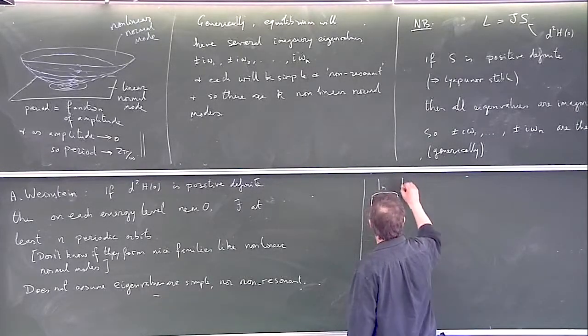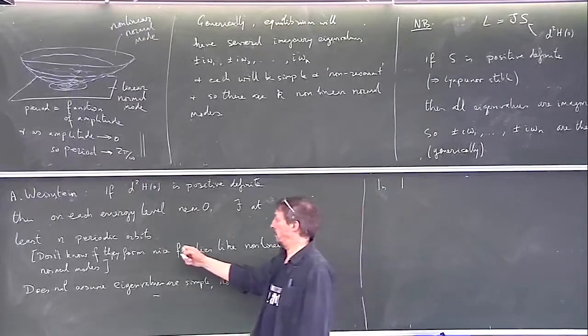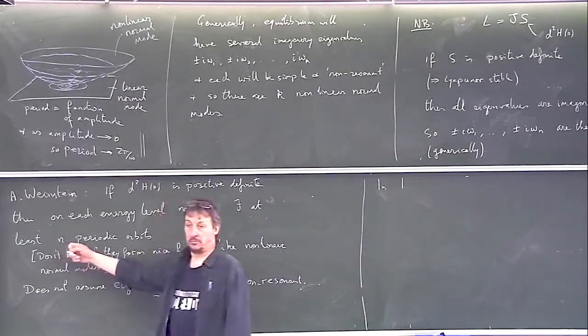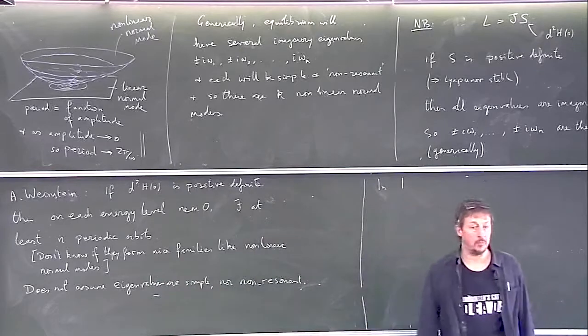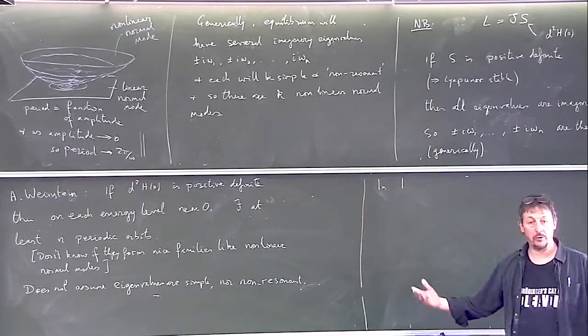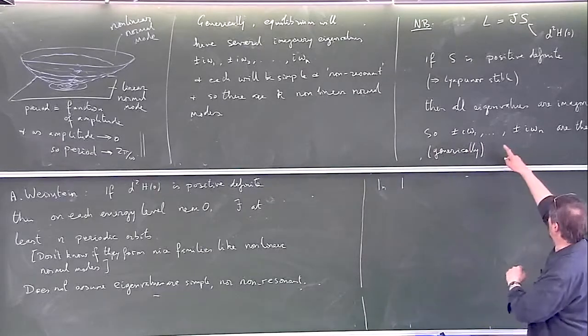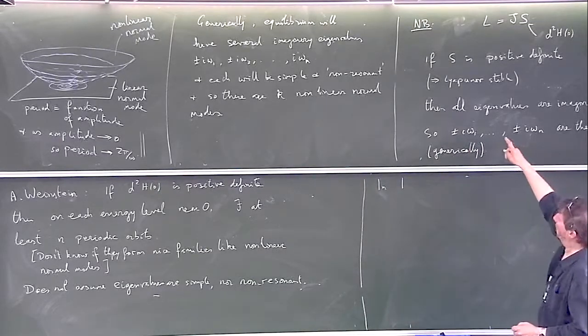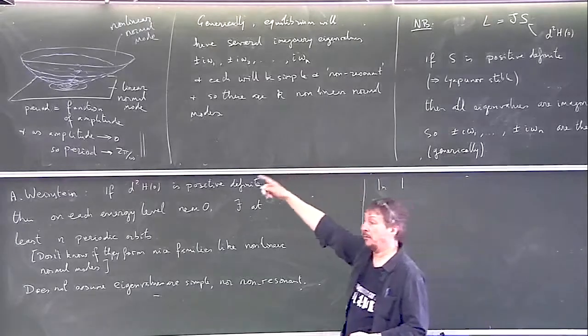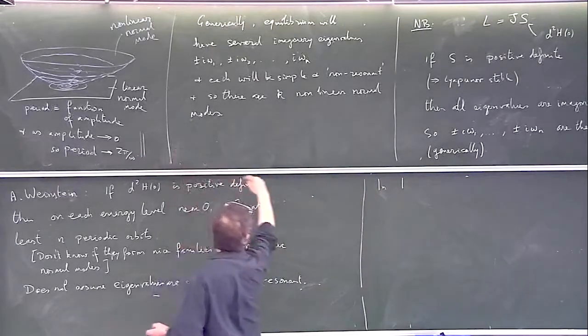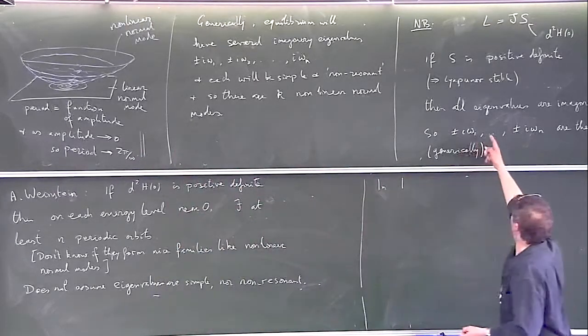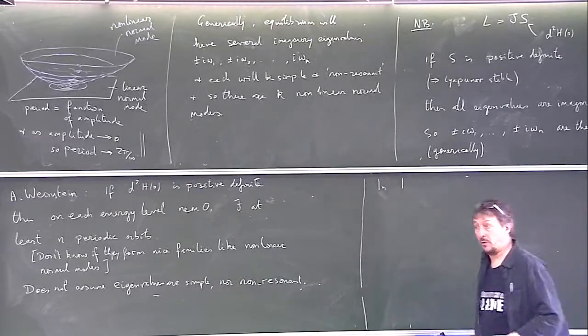So this is not... this is the least bound, right? There may be many more, we don't know. All he can prove is that there are at least N. And if there's no resonance, then you have N precisely N, one for each pair of eigenvalues. So that's what you expect.